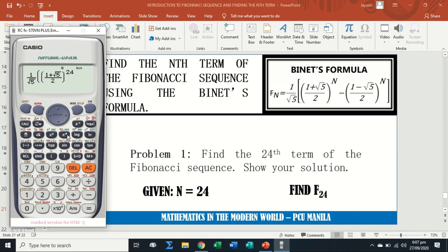Minus—same, we are going to repeat it but this time change the operation—so one minus square root of five over two raised to 24. Once you are done, you can click shift and recall or the function store so you will not be encoding again. Just click equals. Therefore, the value of F sub 24, or the 24th term, is 46,368.